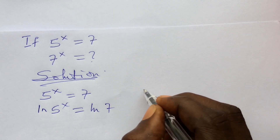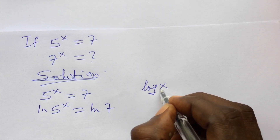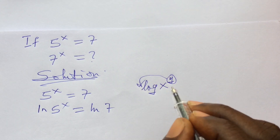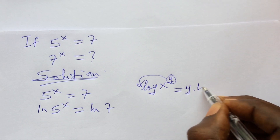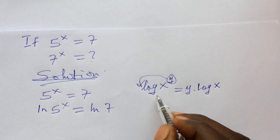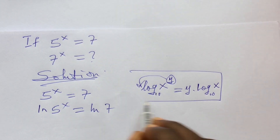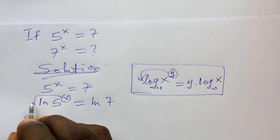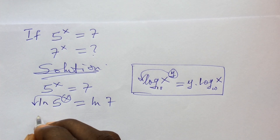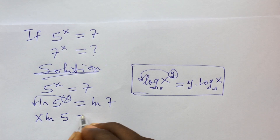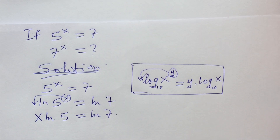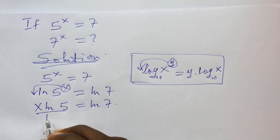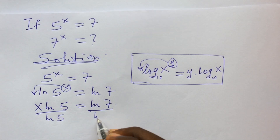Now according to the law of logarithm, if you have log of x to the power of y, you move the exponent to the front, giving you y times log x. Applying that rule here, we move the exponent x to the front, giving us x times ln(5) equals ln(7). To isolate x, we divide both sides by ln(5).